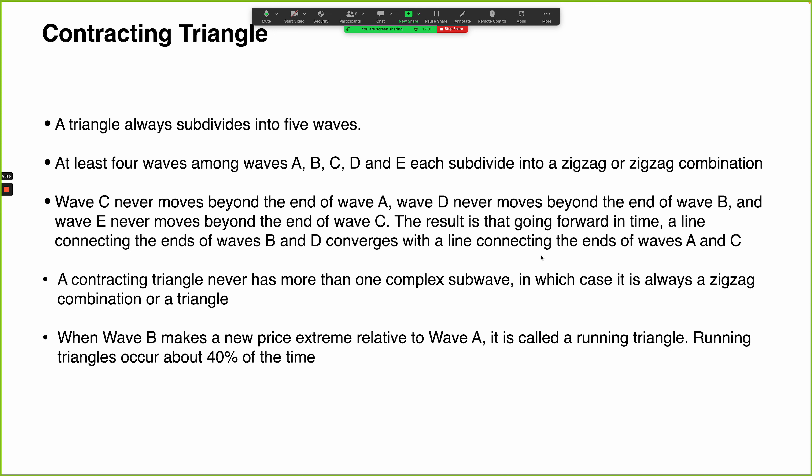A contracting triangle never has more than one complex sub-wave, in which case it is always a zigzag combination — a double zigzag or a triangle. Running triangles are quite frequent; they occur approximately 40% of the time according to Robert Prechter in the late eighties or early nineties. There hasn't been enough research done since, but I would anecdotally place the occurrence of running triangles closer to 50%. They are quite common.